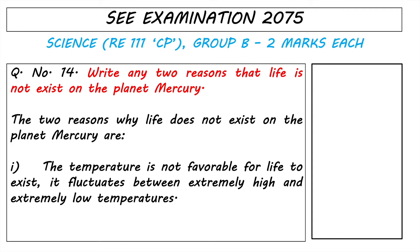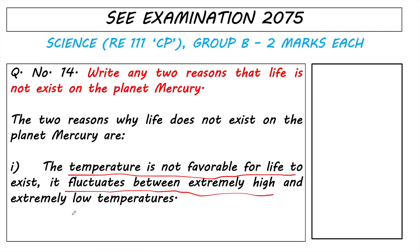The two reasons why life does not exist on the planet Mercury are: the first one — the temperature is not favorable for life to exist because it fluctuates between extremely high and extremely low temperatures.